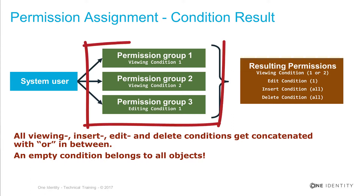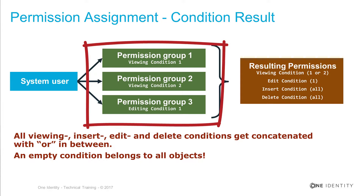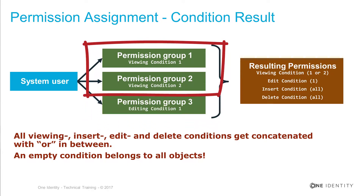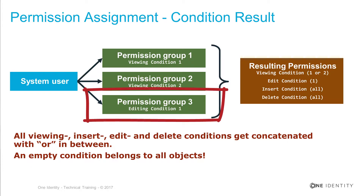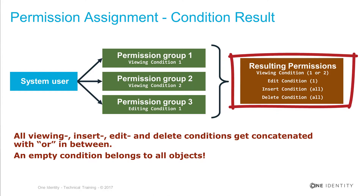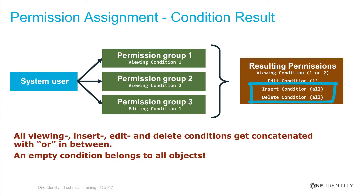On the screen you can see three different permission groups, each with a different condition. There are two viewing conditions, different volume conditions, and one editing condition. The result set shows that viewing permissions are assigned with an OR between them — one is valid in the same way as the other — and you get the edit where clause as well. If there is no condition set on a specific object class, all objects are affected. That means if no condition is defined, the permission is valid for every object.